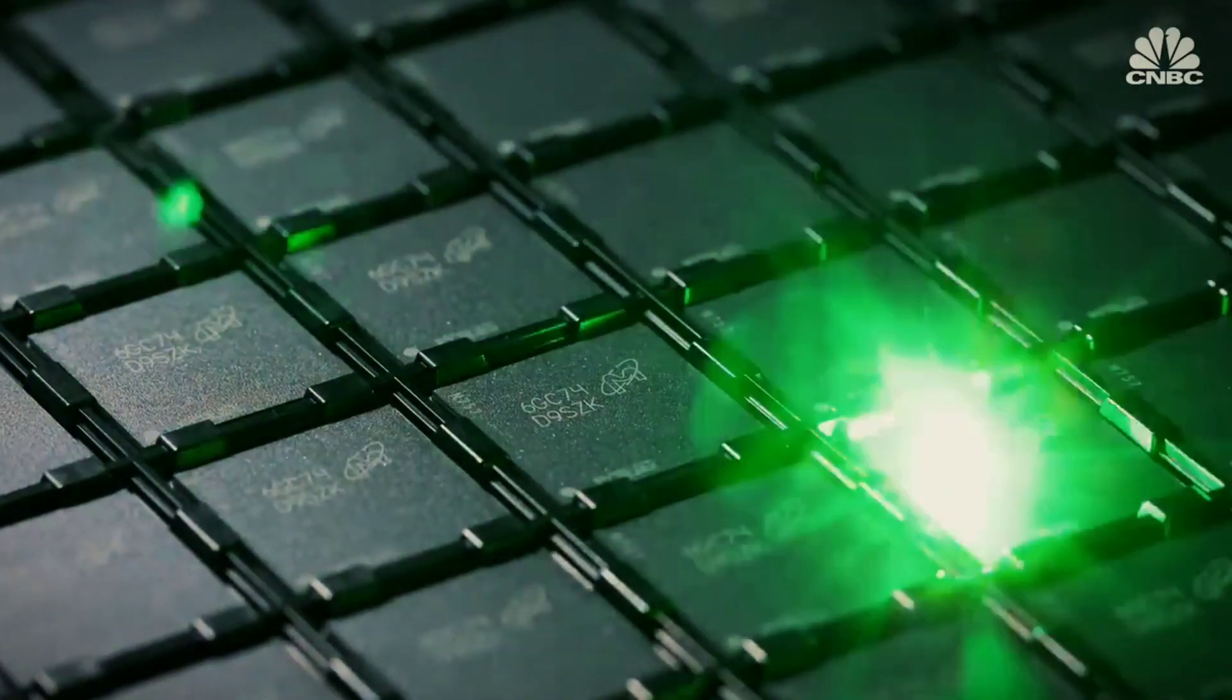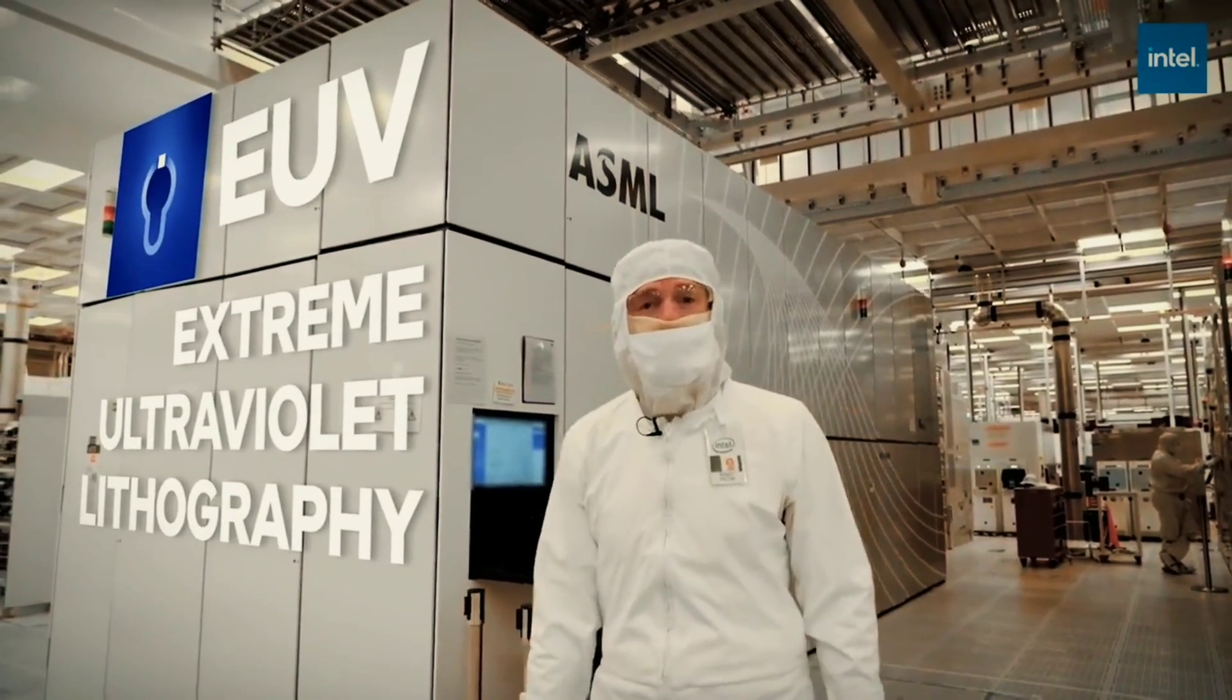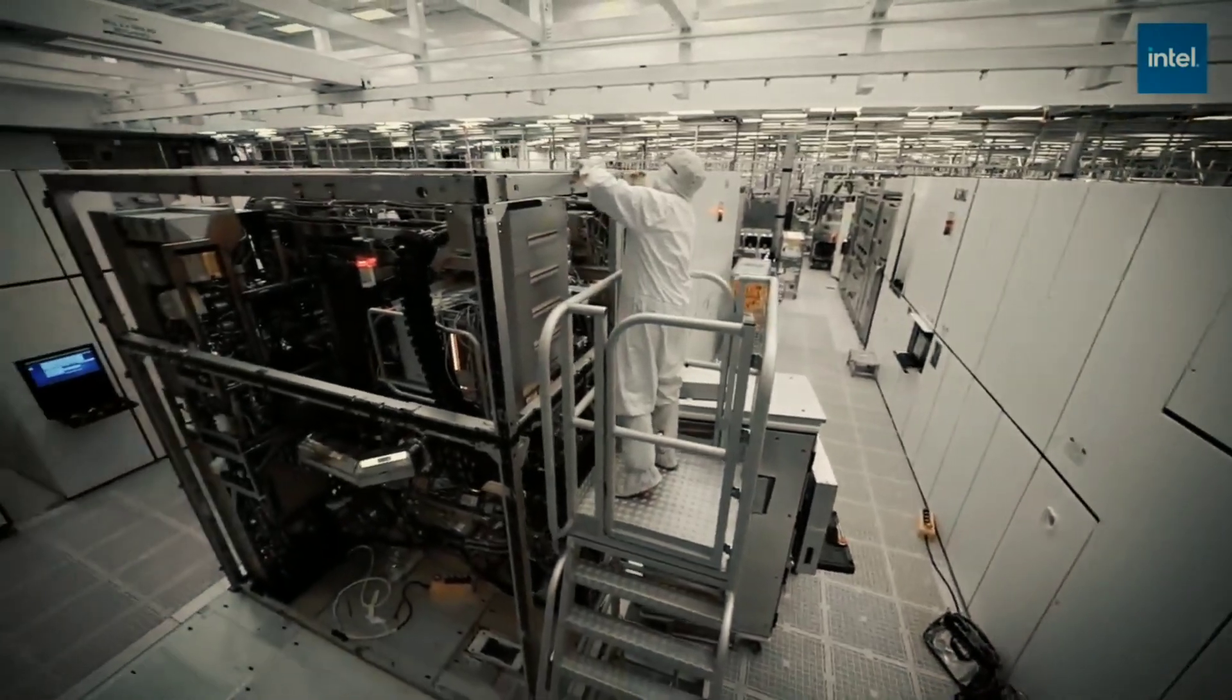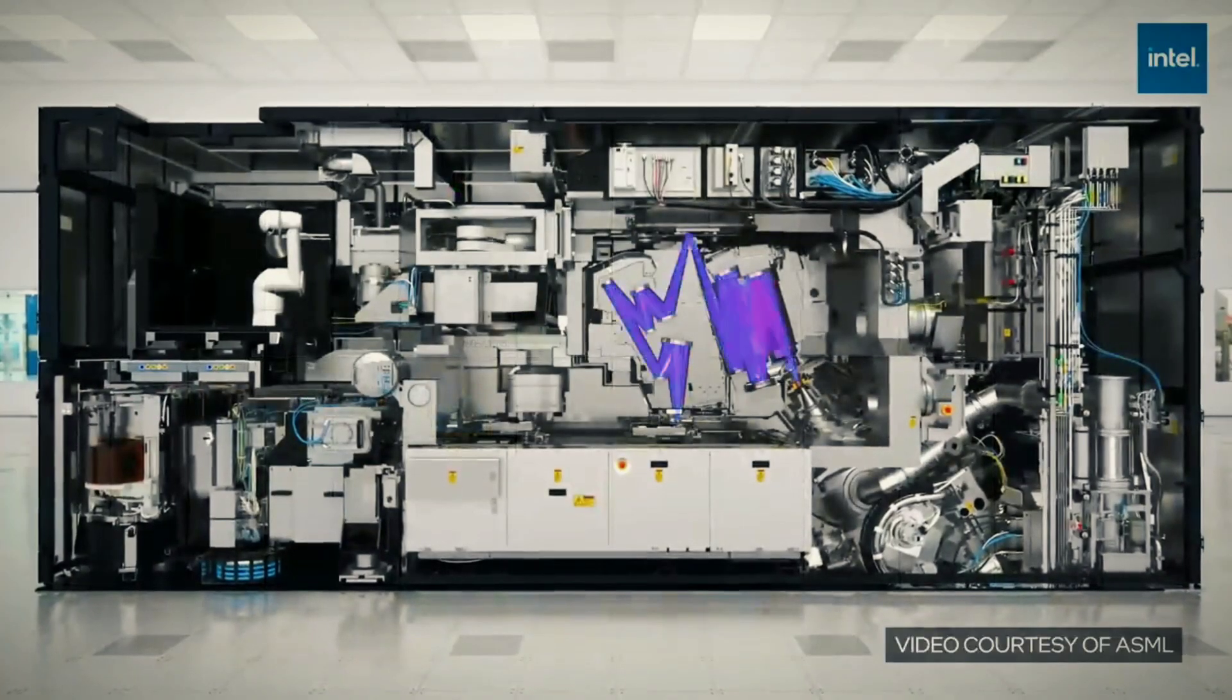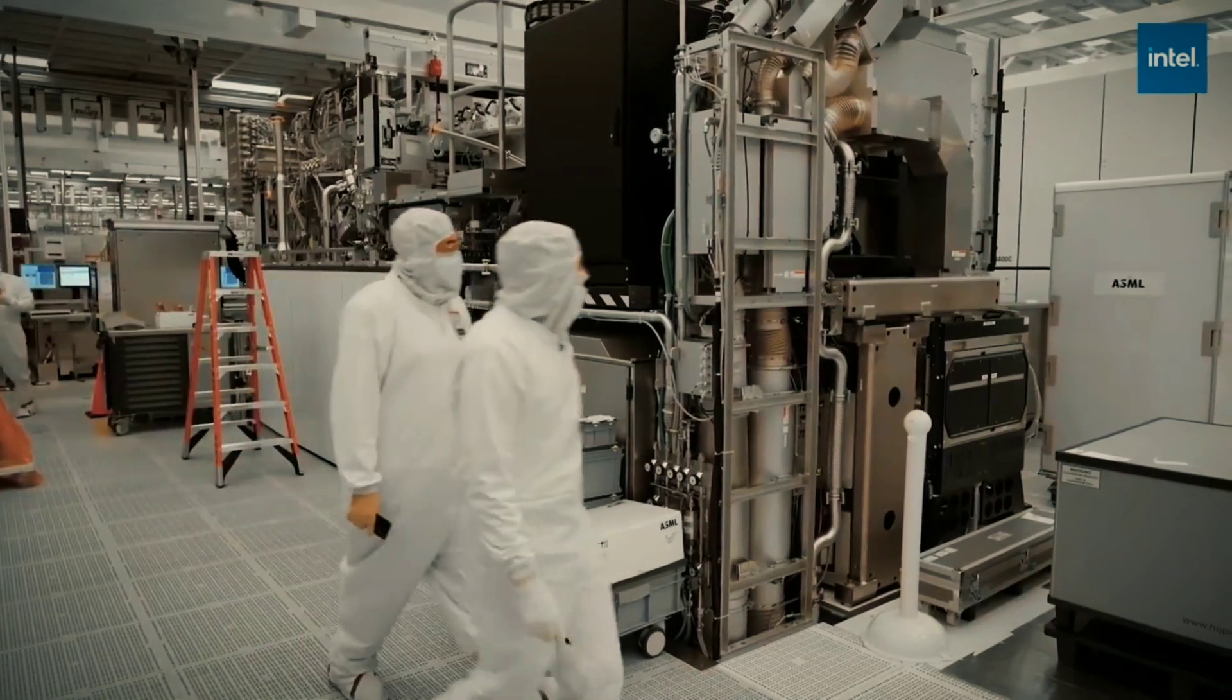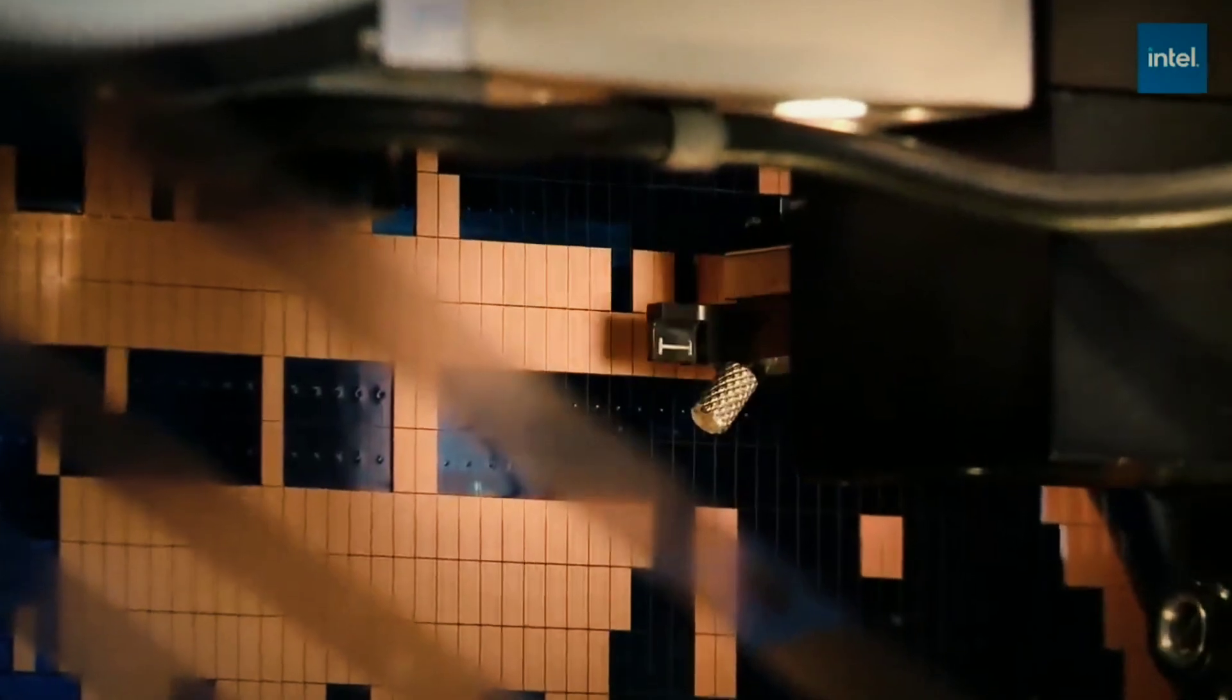With cutting-edge technology known as Extreme Ultraviolet Lithography, EUV, TSMC has been able to build chips at 5 nanometers and 3 nanometers process nodes, which are the tiniest and most advanced in the industry, using an extremely low wavelength of light, around 13.5 nanometers.